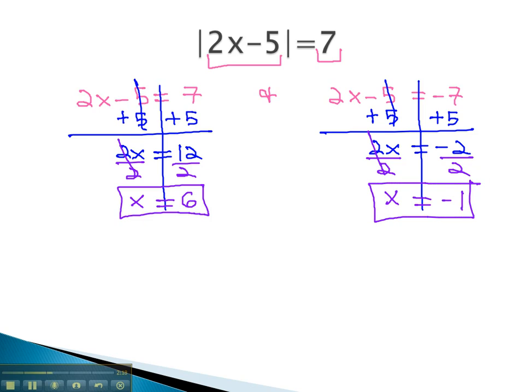It is important to note, with absolute value, we should always have two different solutions: x equals 6, and x equals negative 1.